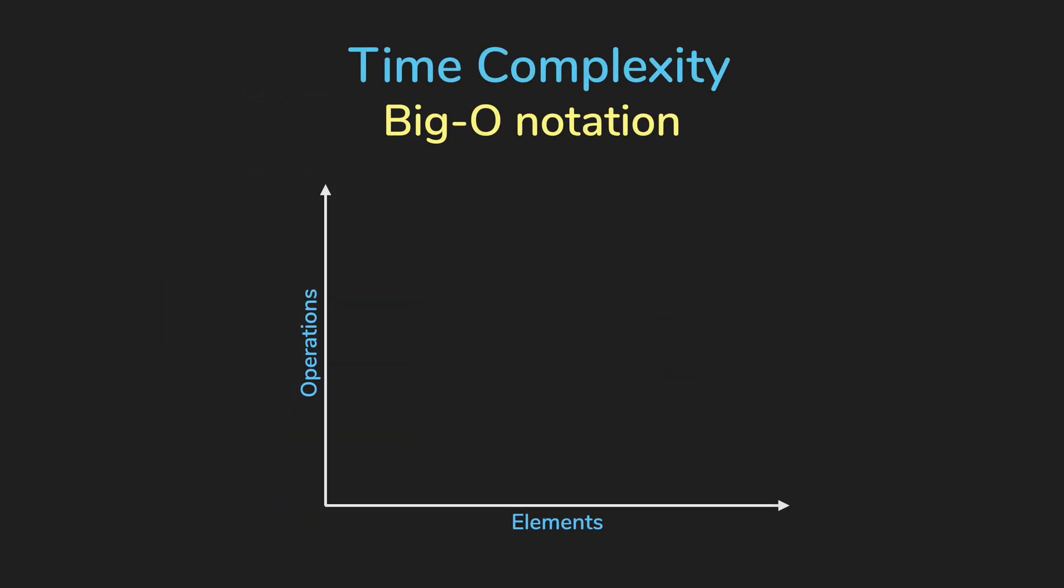So we've seen three types of time complexities. Constant time complexity is when we're just doing a simple operation. Linear time complexity is when we have to loop through the input. And quadratic time complexity is when there is a loop in a loop.